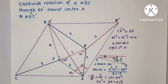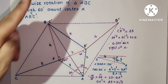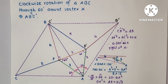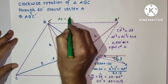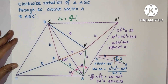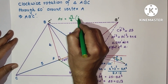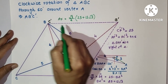So BA squared equals 25 plus 12 root 3. Now we know the area of an equilateral triangle is root 3 over 4 times side squared. Since BA equals AC equals CB, the required area equals root 3 over 4 times BA squared, which is root 3 over 4 times (25 plus 12 root 3). This is the final answer.